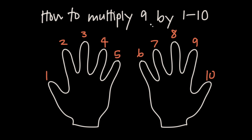For example, if we want to multiply 9 by 1, we would bend down the first finger. Then we ask ourselves how many fingers do we have to the left and right of this bent finger? We have 0 fingers on the left and 9 fingers on the right. So 9 times 1 is equal to 09, or just 9.